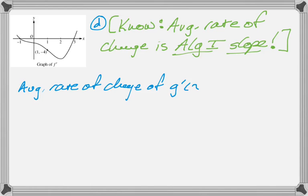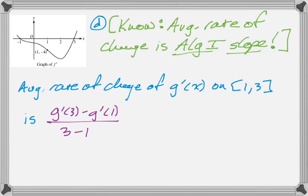So the average rate of change of g'(x) on the interval from 1 to 3 is algebra 1 slope. So that's going to be g'(3) minus g'(1) over 3 minus 1. We haven't actually calculated g'(3) at this point, so let's do that.